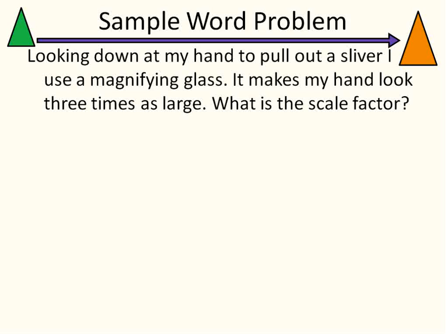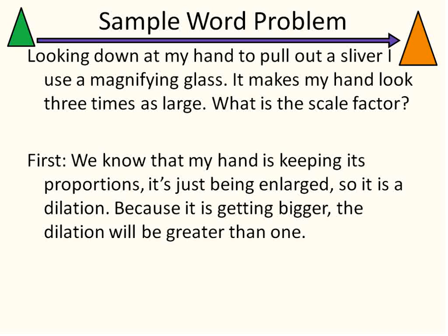Looking down at my hand to pull out a sliver, I use a magnifying glass. It makes my hand look three times as large. What is the scale factor? First, I'm going to determine: is this a dilation? We know that my hand keeps its proportions — the ratio between them does not change. My hand doesn't change when I'm looking at it; it's just being enlarged. So it is a dilation.